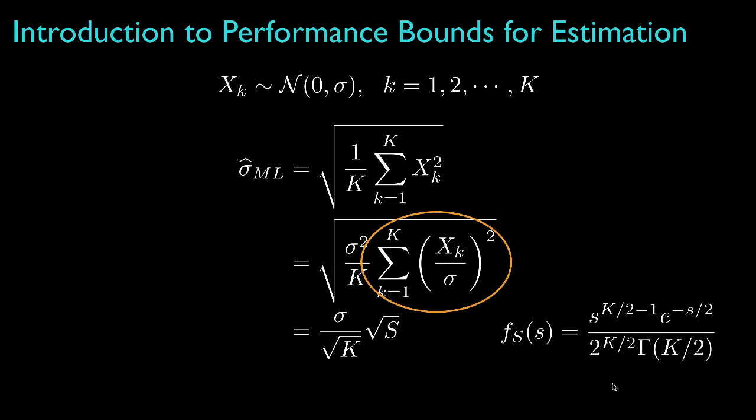The distribution for this random variable depends on the number of elements in the sum, and accordingly we say that the random variable s is a chi-square random variable with k degrees of freedom.